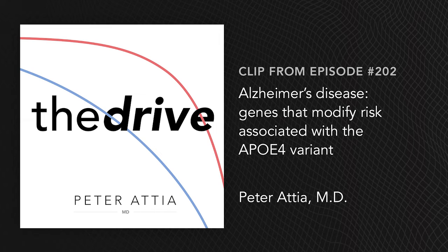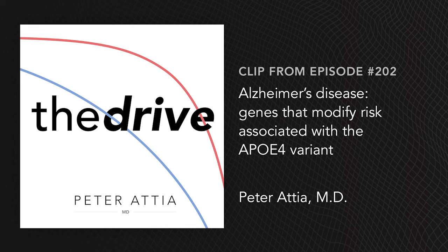Some things make APOE4 risk more significant, some things make it less. There are certain haplotypes of the TOM40 gene that amplify risk, and certain mitochondrial haplotypes that amplify risk. One of the most exciting genes is the Klotho modifier — KLVS is the modified SNP of Klotho — that actually seems to erase all of the downside of APOE4. So APOE4 people who have this Klotho subtype have baseline risk.